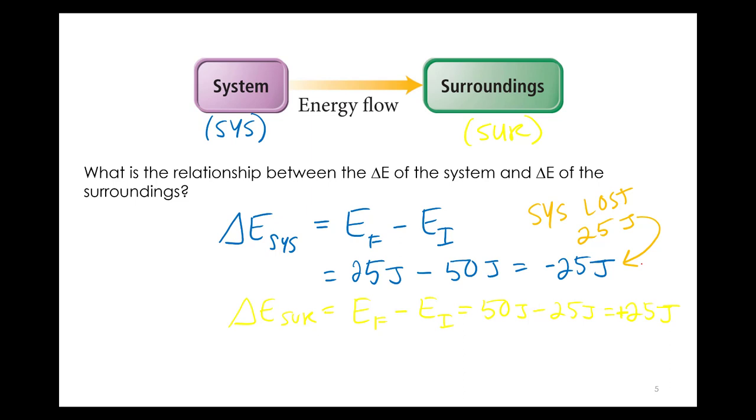So what happened to the surroundings? What does a plus 25 joules mean? It gained. So the surroundings gained 25 joules.